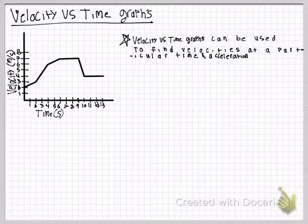Velocity vs. time graphs can be used to find velocities at a particular time and acceleration.